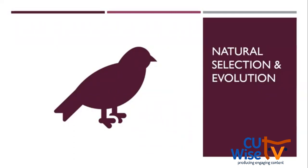Brown beetles are best adapted to survive on wood logs because they match the color, making them less likely to be eaten by predators. When we talk about adaptations, we mean traits inherited from parents that made those parents more likely to survive and reproductively successful. This concept of natural selection allows us to understand our landscapes by showing us the importance of diversity and biodiversity. Selective pressures come from other aspects of the ecosystem — not just predator-prey, but also competition. Plants with deeper root systems to gather more water will reproduce more easily than those without that trait.